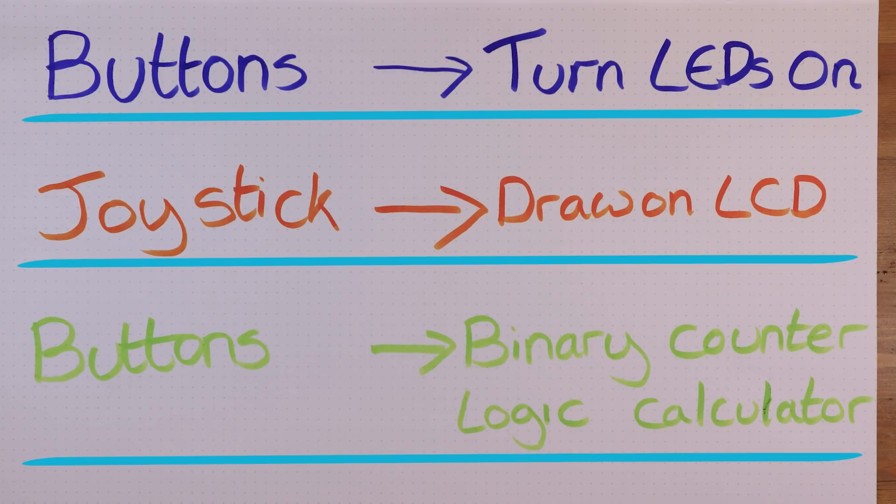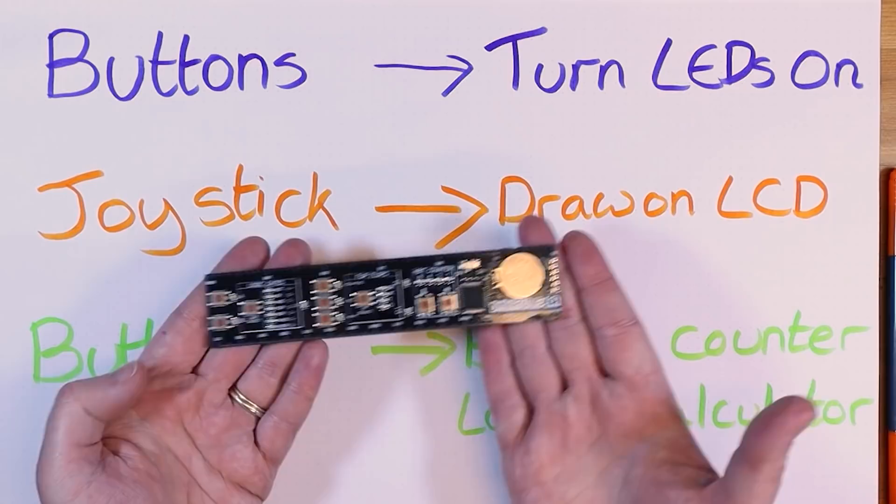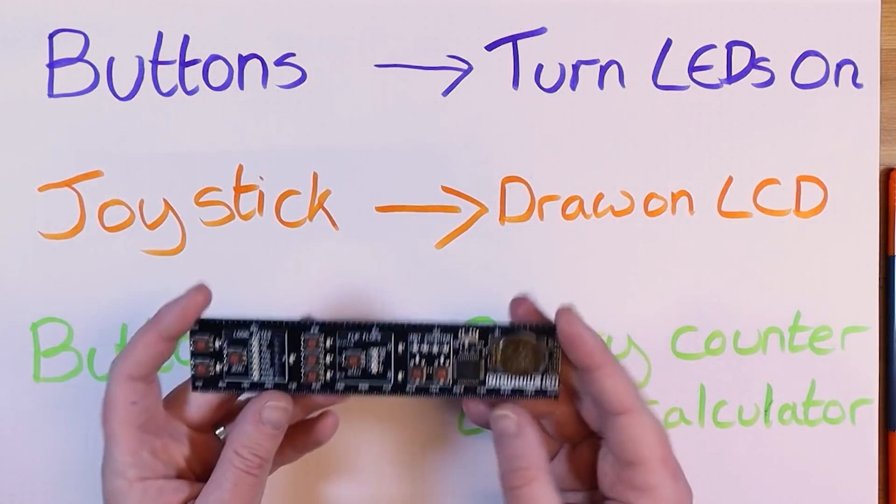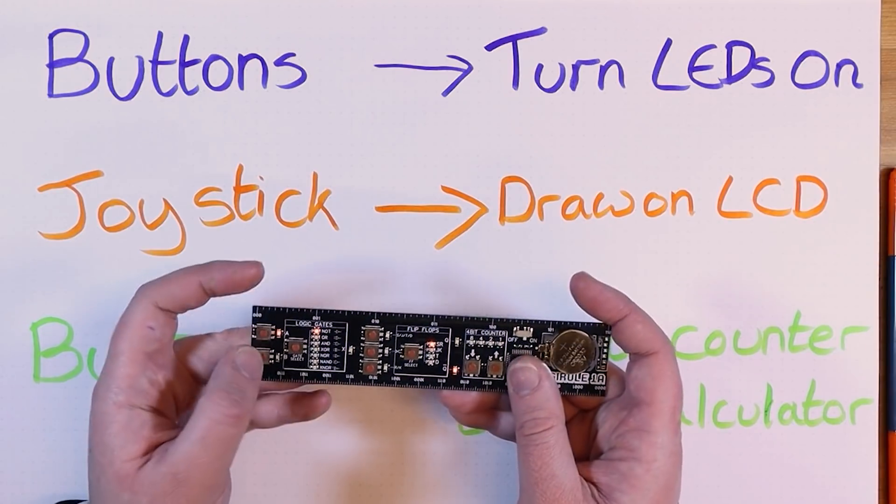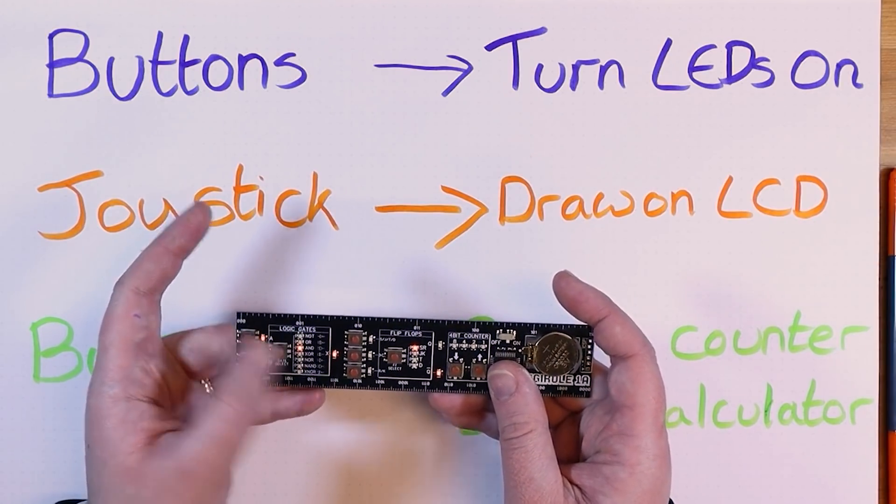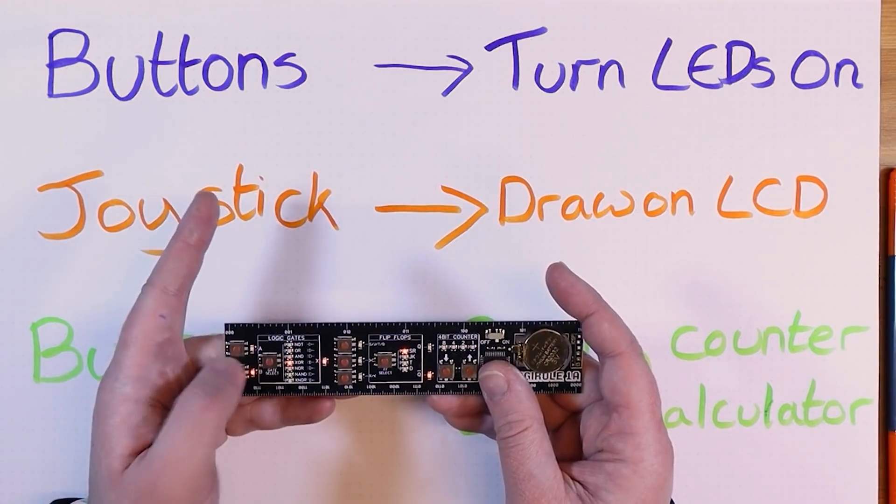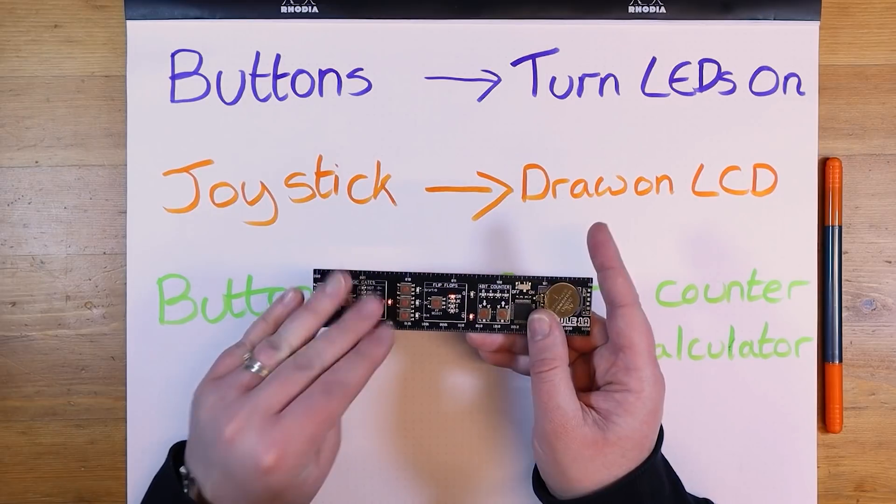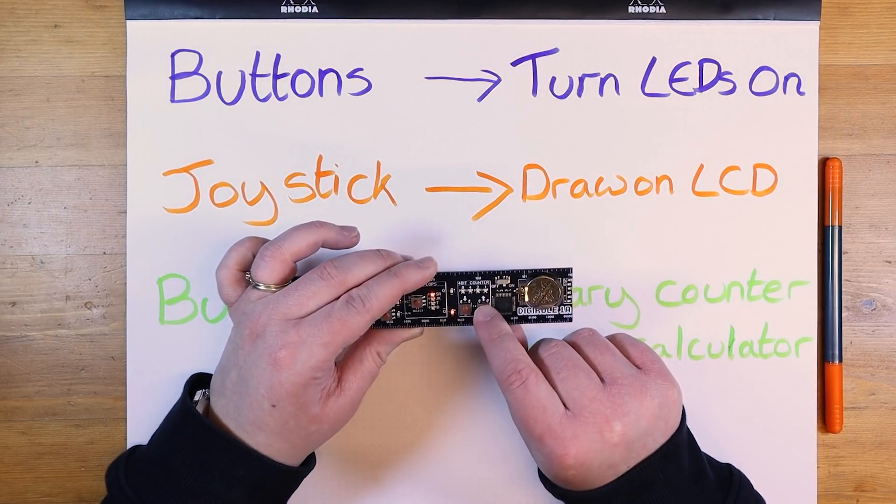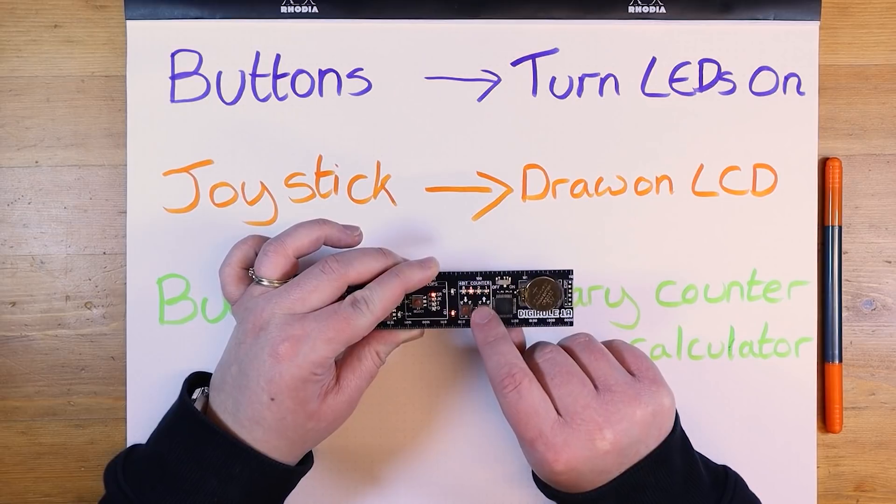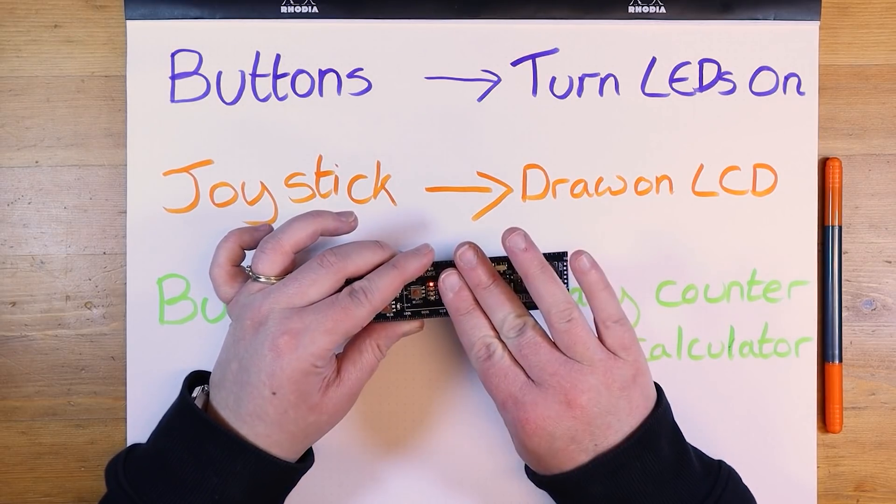And then the third side it's going back to the buttons but adding a little more complexity. I've got this ruler on my desk. I sit here quite often and fiddle. I really like the logic gates. I'm going to come up with something with like a logic gate calculator on. And there's a four bit binary counter. You can go up and down. So I'm going to do something on my third side with that.